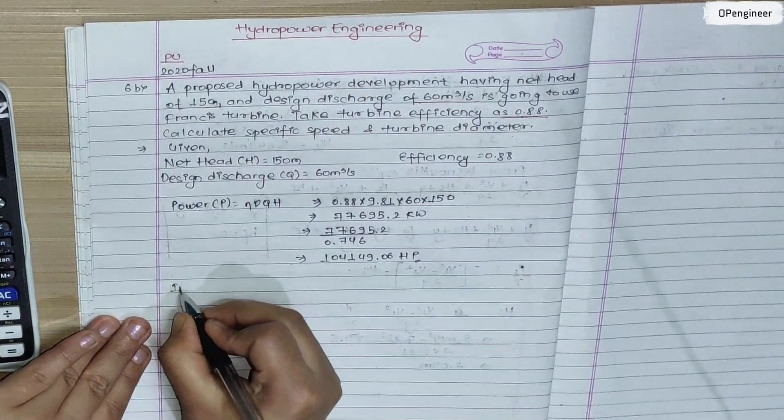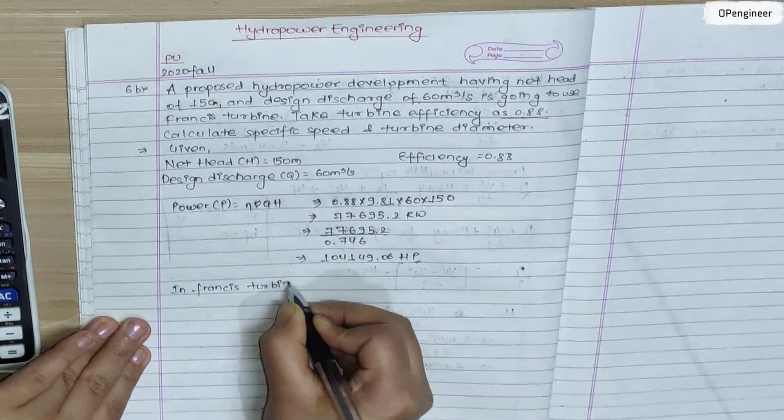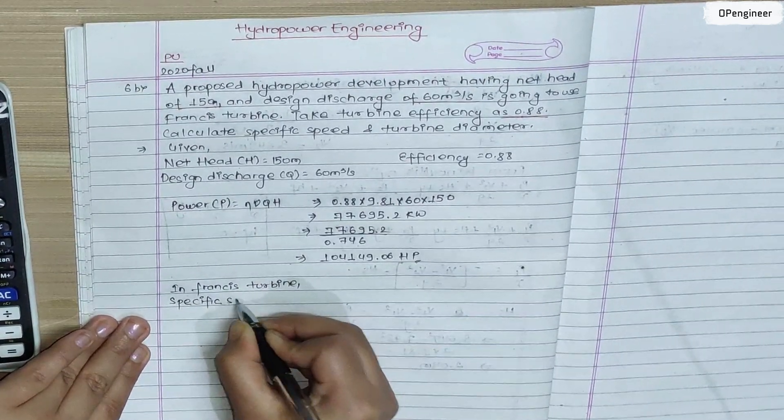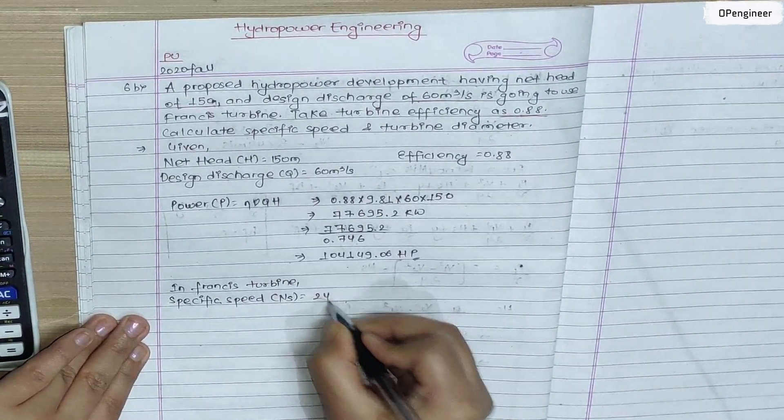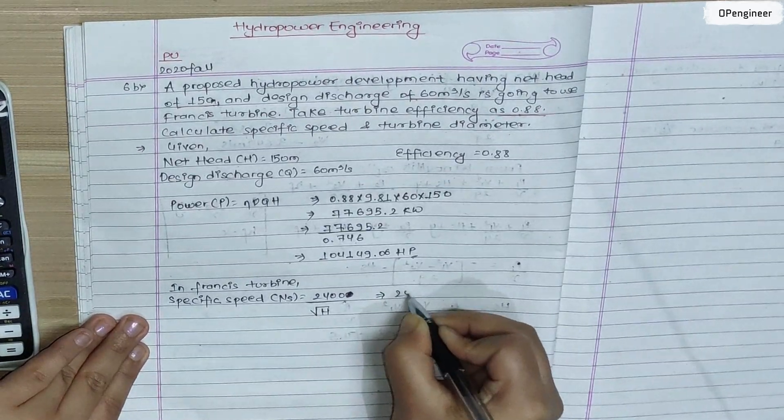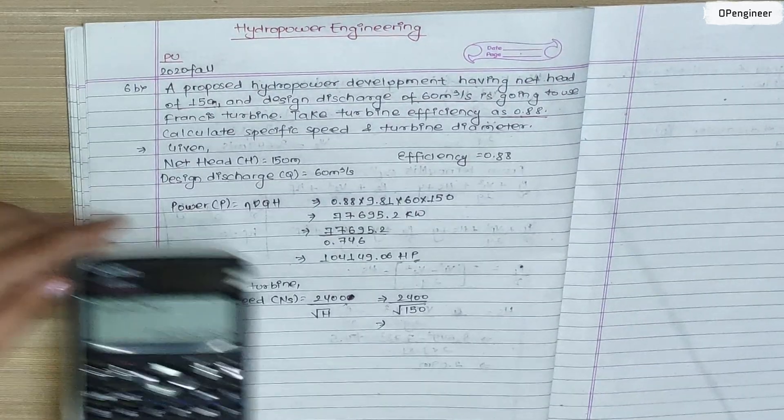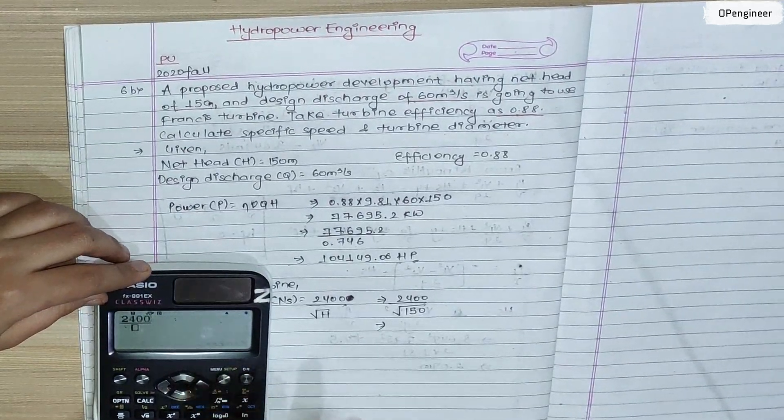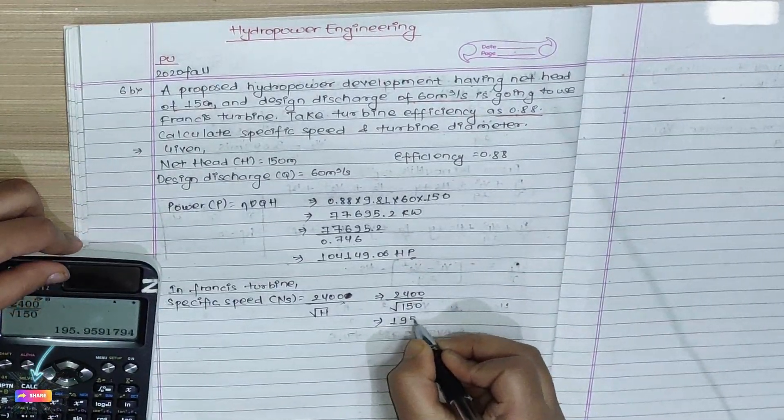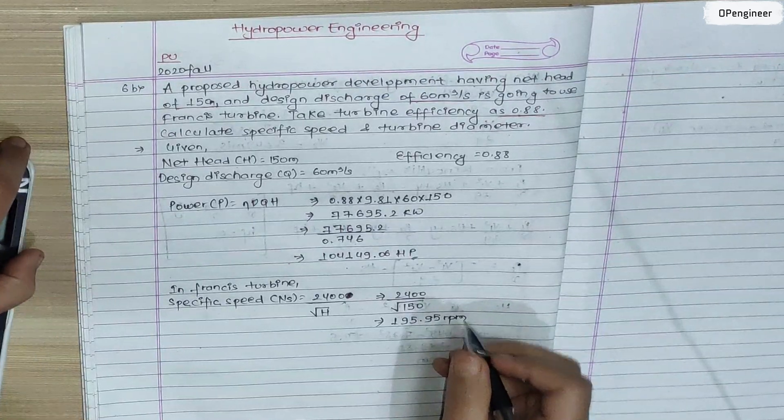The output in kilowatt is 120 into frequency divided by root over 150. So this is 2,400 by root over 150. Calculate this: 195.95 RPM specific speed.